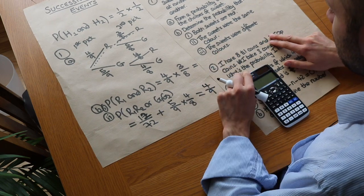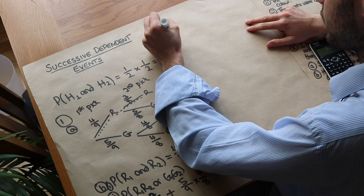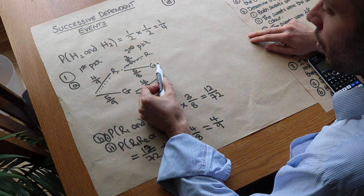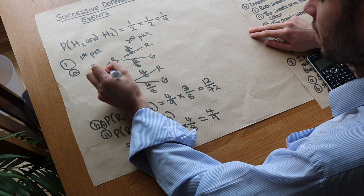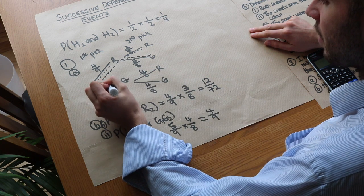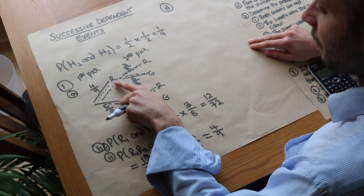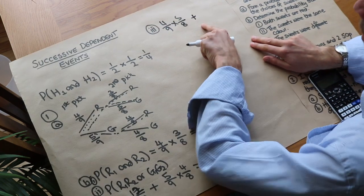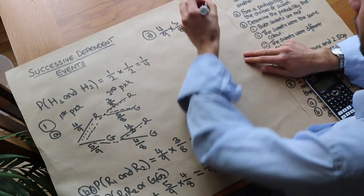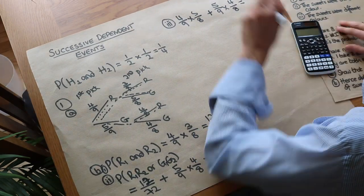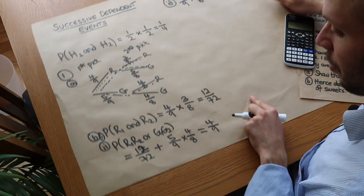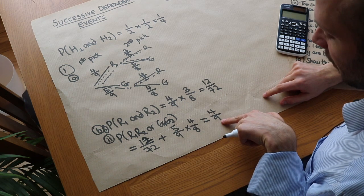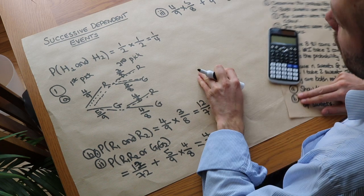For part D, the probability the sweets were different colours: it could be red then green, or green then red. That's four ninths times five eighths, plus five ninths times four eighths, giving five ninths. We could also have used 1 minus four ninths (the same-colour answer) to get five ninths more quickly.